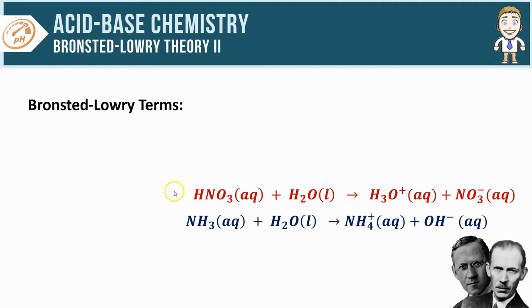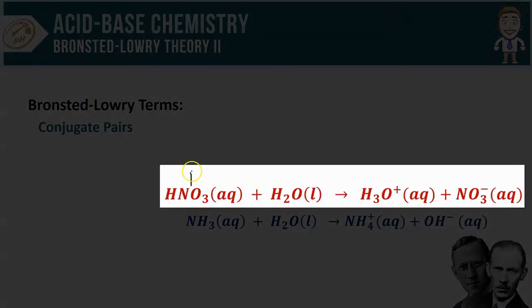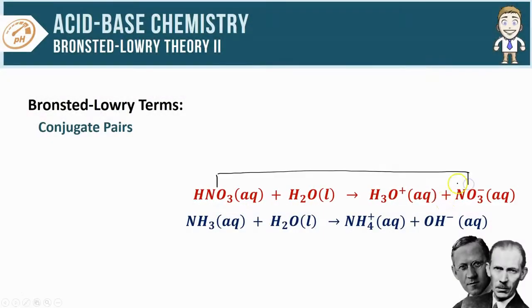Conjugate pairs refers to a particle from the reactants side of the equation, like HNO3, and showing what that particle turns into on the products side. So HNO3 turns into NO3-, those two would be considered conjugate pairs. So would H2O and H3O+. Each pair is composed of a protonated and a deprotonated form.